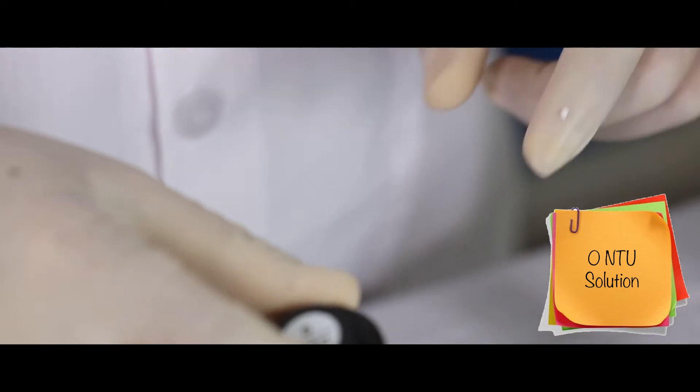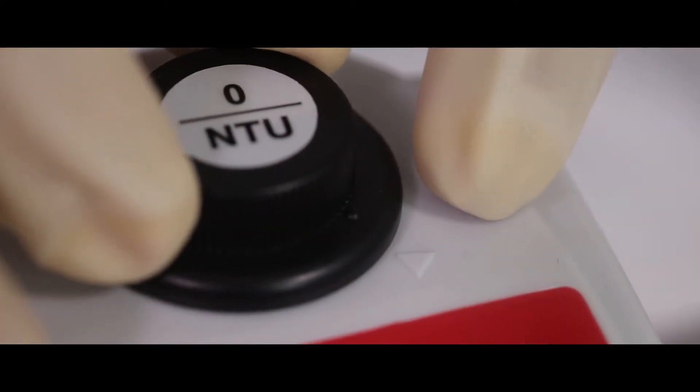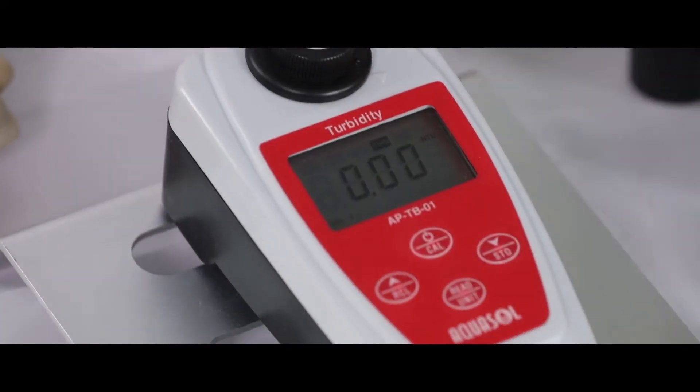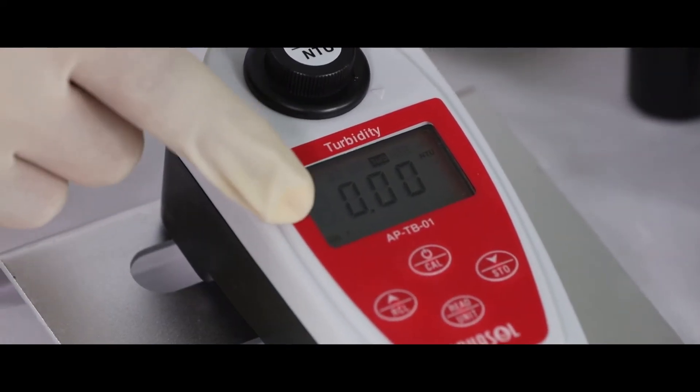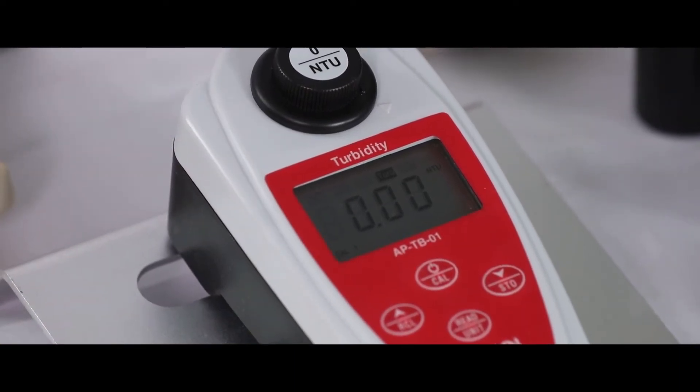Place the 0 NTU solution into the meter. Please make sure the notch on the meter aligns with the notch on the bottle. Press the read key to calibrate. The CAL icon will flash on the display. Once the meter is calibrated to 0.00...